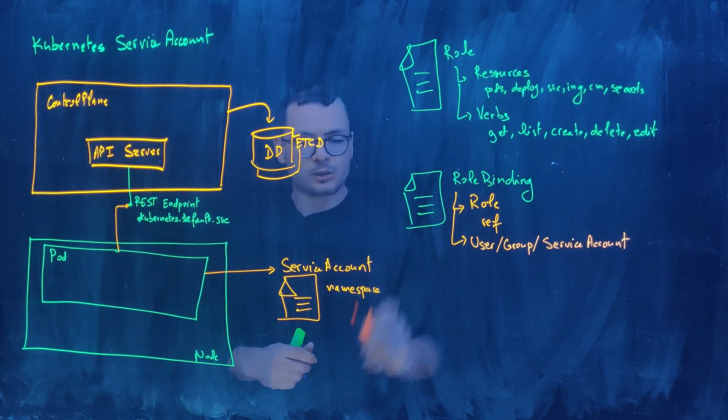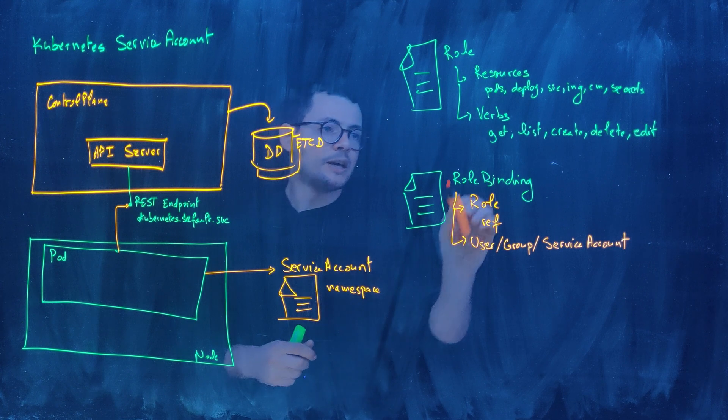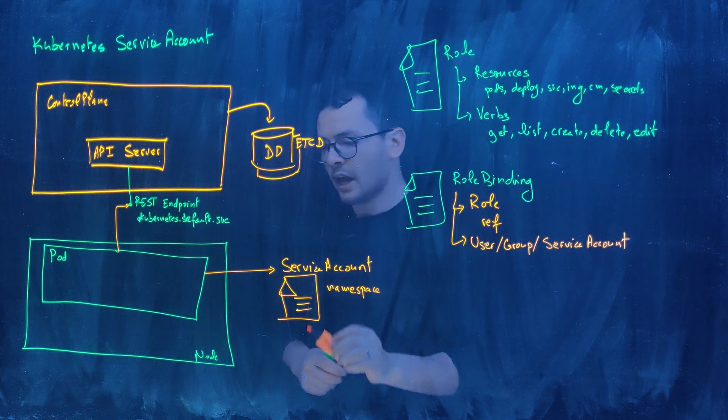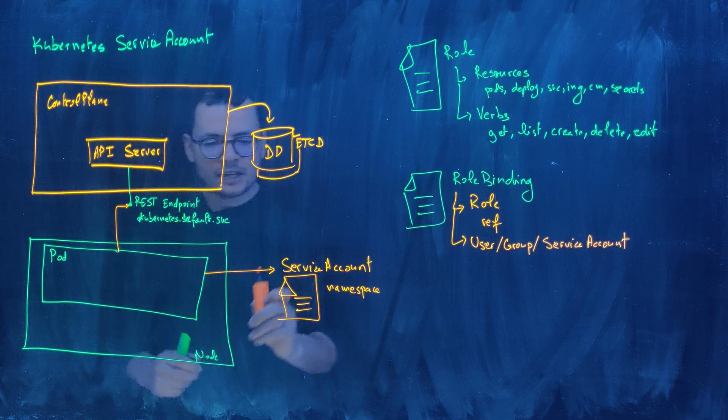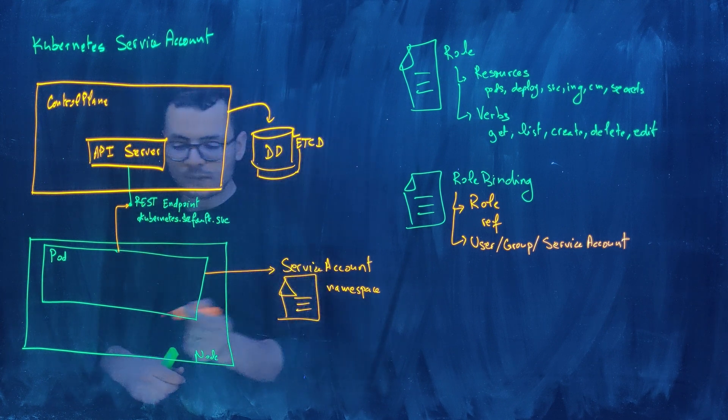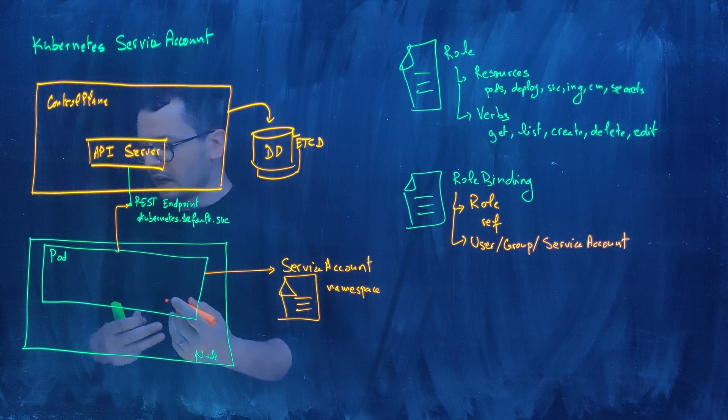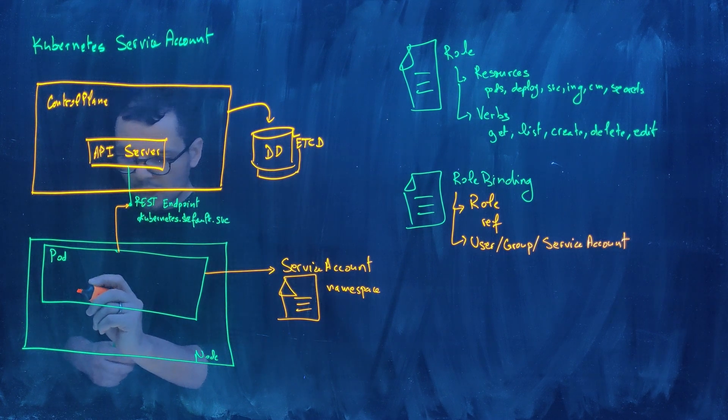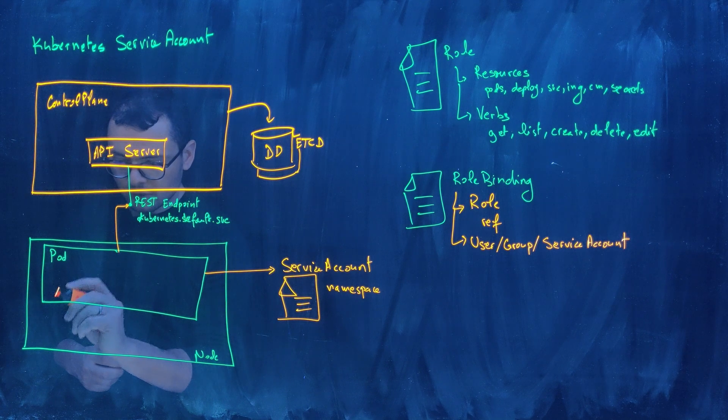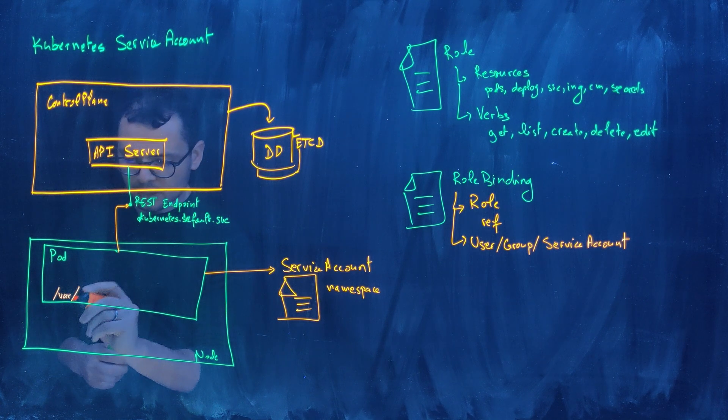So then if I do this config, my service account will get that RBAC role and it will use it inside the pod. So how will it use it inside the pod? Actually, what will happen is that the service account will mount a directory inside my pod. So it will go inside a specific folder. I think it's something like /var...